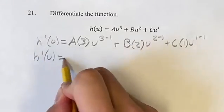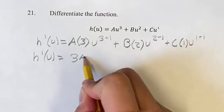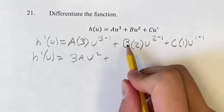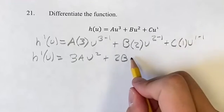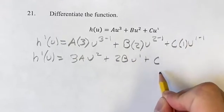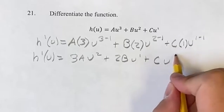Now, this is something we can simplify. So, you have 3a, u to the 3 minus 1 is u squared, plus 2b, u to the 2 minus 1 is u to the 1, plus 1 times c, c, u to the 1 minus 1 is u to the 0.